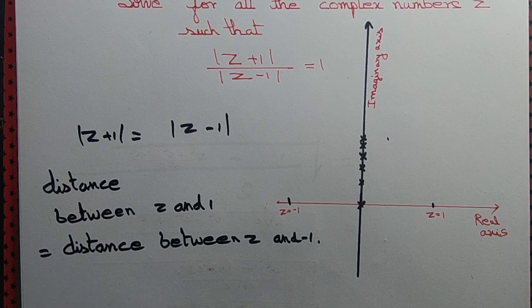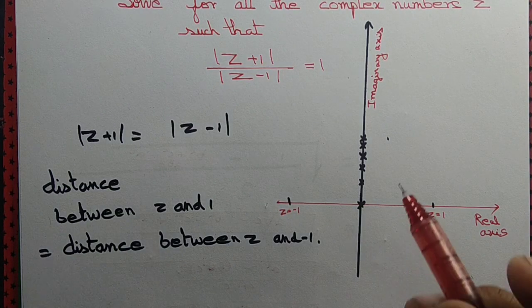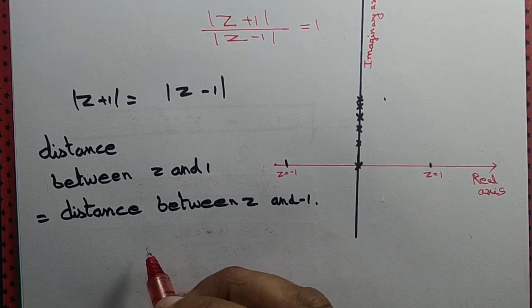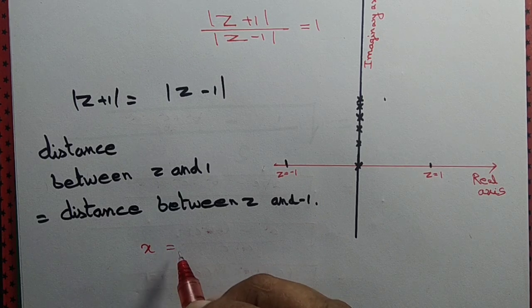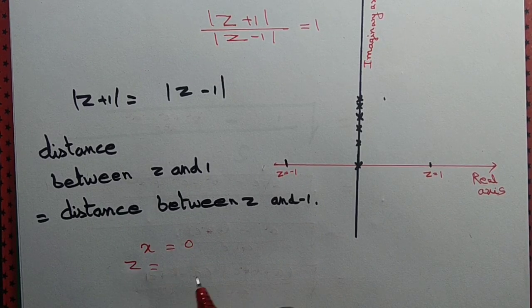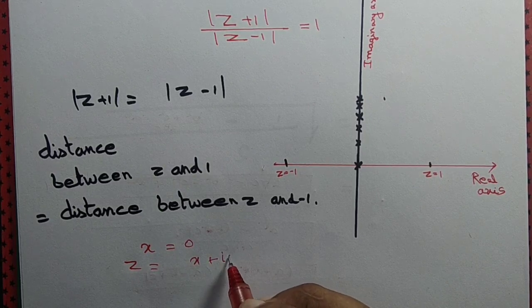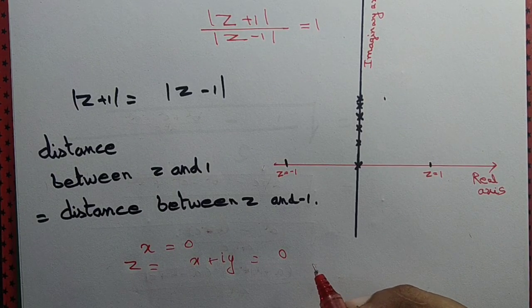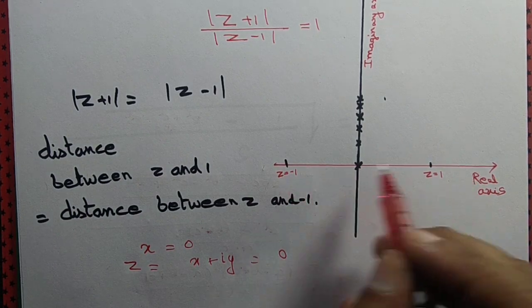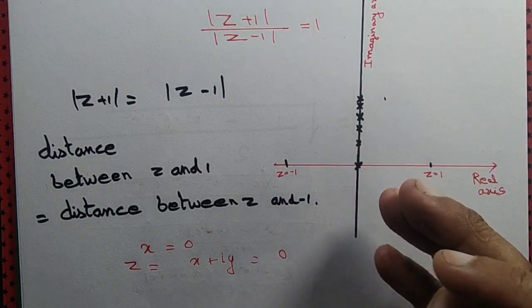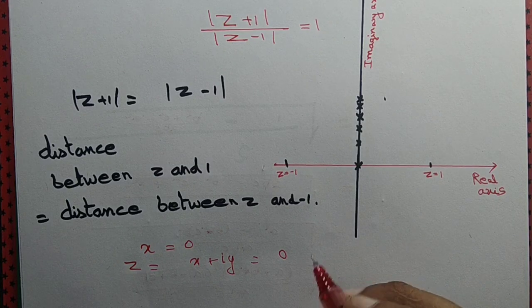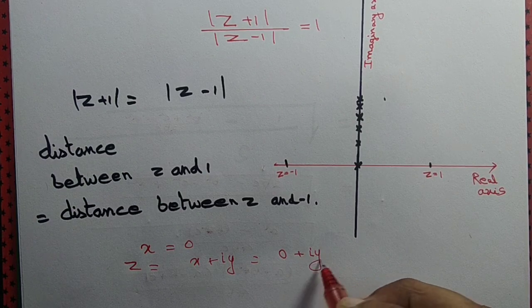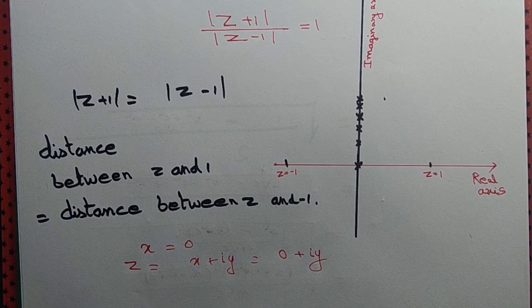So what is the answer? The imaginary axis. Any point on the imaginary axis is given simply by x equal to 0, so z equal to x plus iy becomes 0 plus iy. Therefore z equal to iy is the solution.